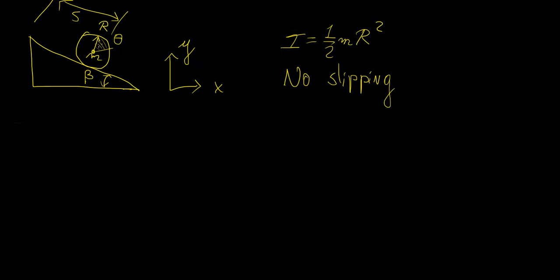When deriving equations of motion, we need to consider how many degrees of freedom a particular system has. Here, concerned with the disk rotating down the hill, there can be three degrees of freedom. In the Cartesian coordinate system, we have displacement along x, displacement along y going down, and rotation — so three degrees of freedom requiring three equations of motion.